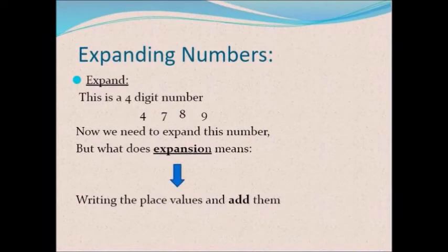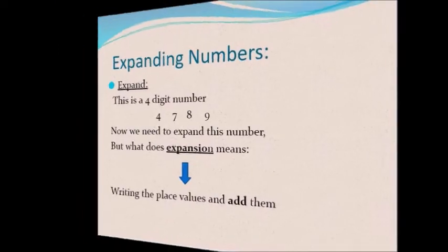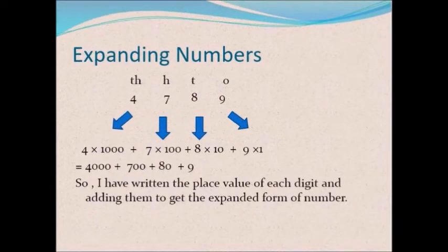We have learned four-digit numbers. This is a four-digit number: 4789. Now we need to expand this number. What does expansion mean? It means that we have to write the base value of these numbers and add them. So if we have the four-digit number 4789, we know that four is at the thousands position.